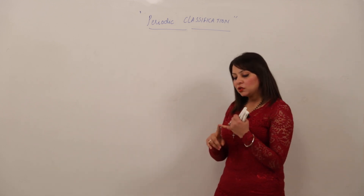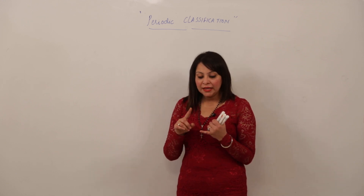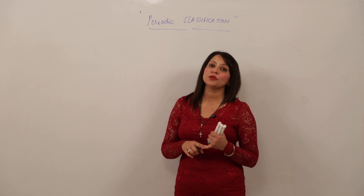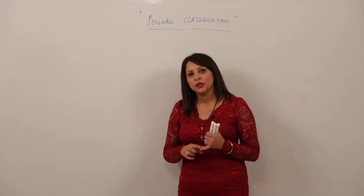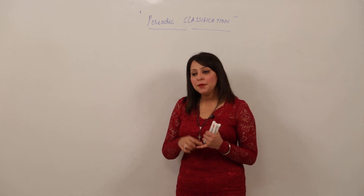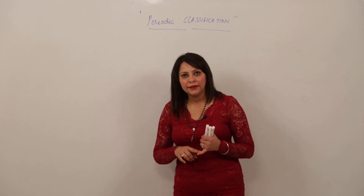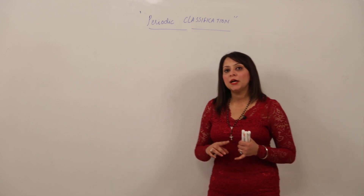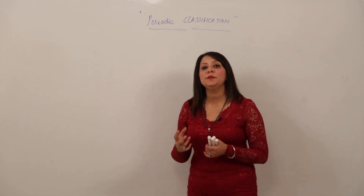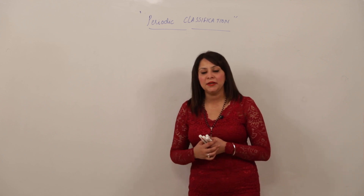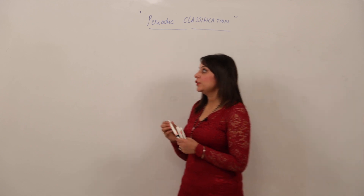We know that matter is made up of atoms. Atoms are the building blocks of elements — that means atoms unite to form elements. So we can say that elements form the basic unit of matter. Now the question comes: what kind of elements are there, how many elements are there, and where are those elements found?